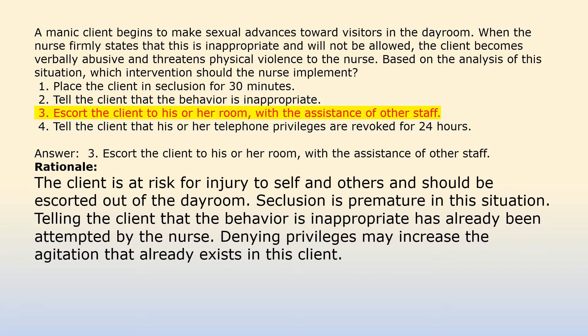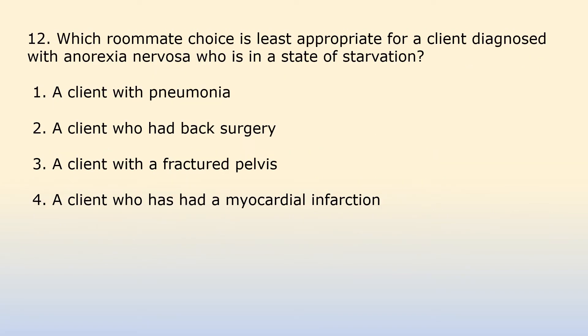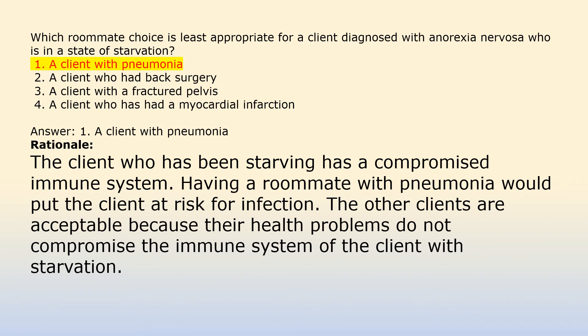Which roommate choice is least appropriate for a client diagnosed with anorexia nervosa who is in a state of starvation? Option 1: A client with pneumonia. Option 2: A client who had back surgery. Option 3: A client with a fractured pelvis. Option 4: A client who has had a myocardial infarction. Answer 1: A client with pneumonia. The client who has been starving has a compromised immune system. Having a roommate with pneumonia would put the client at risk for infection. The other clients are acceptable because their health problems do not compromise the immune system of the client with starvation.